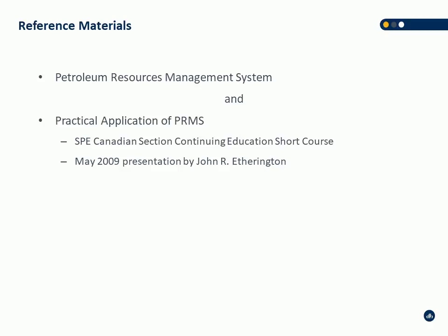Just to give you a rough comparison: COGI Volume 1 is about 280 pages front to back. PRMS has about 30 pages of documentation in the actual document before it gets into glossaries and appendices. PRMS is virtually the same in terms of definitions, but it is much more brief and much less comprehensive than COGI. COGI Volume 2 is another 300 pages, and the Practical Application of PRMS is about 250 pages.